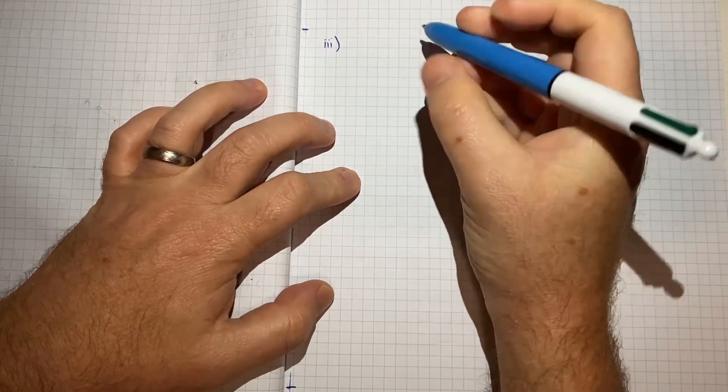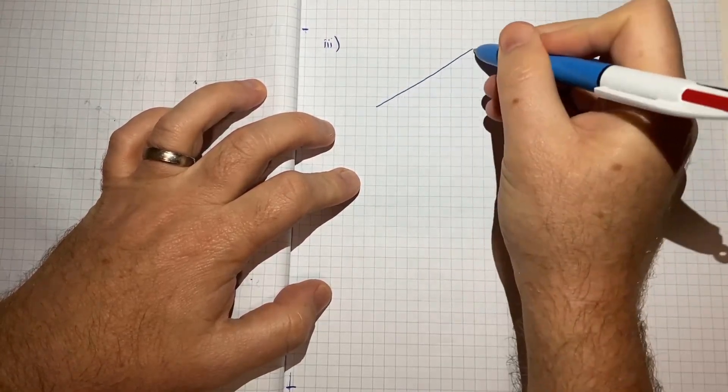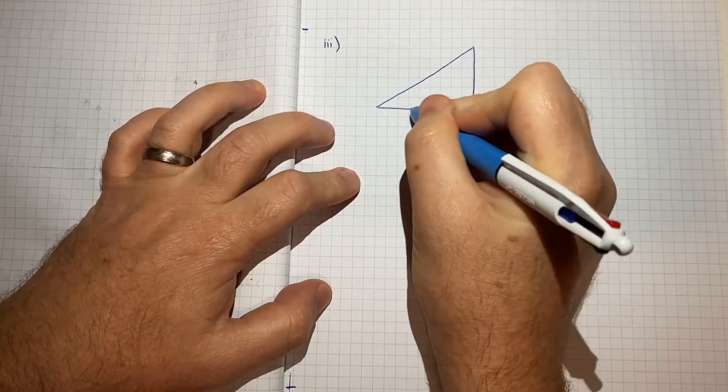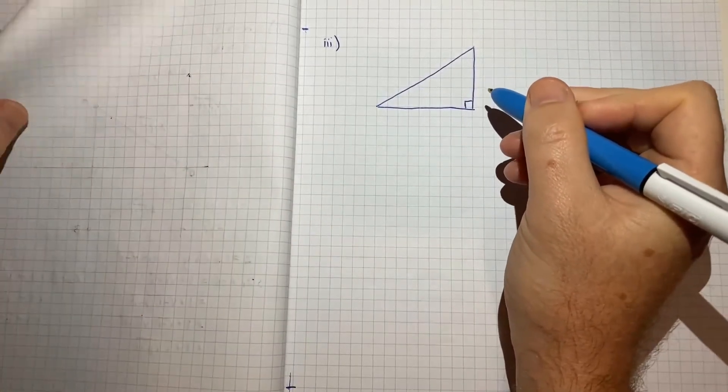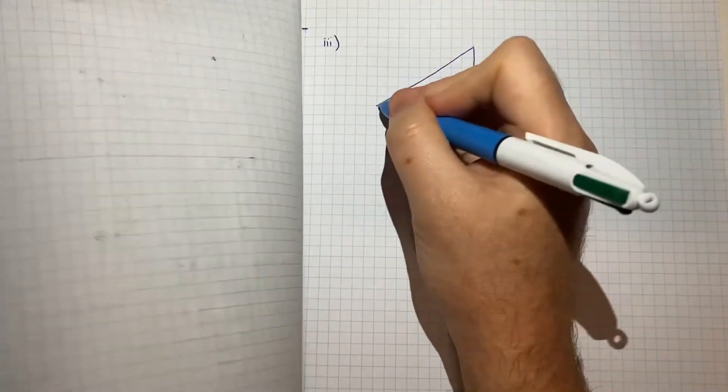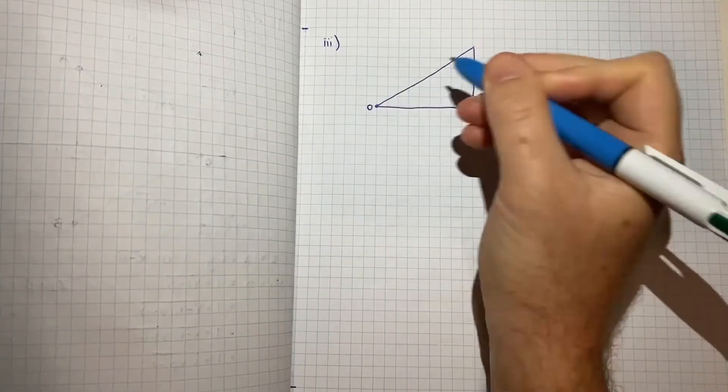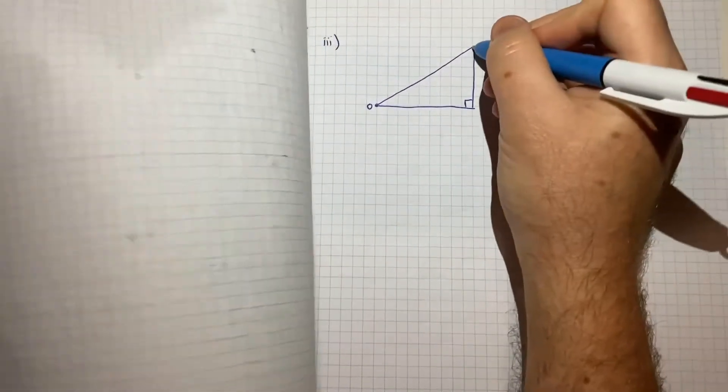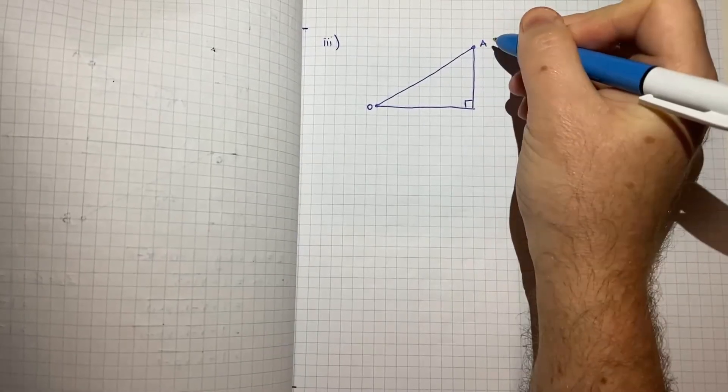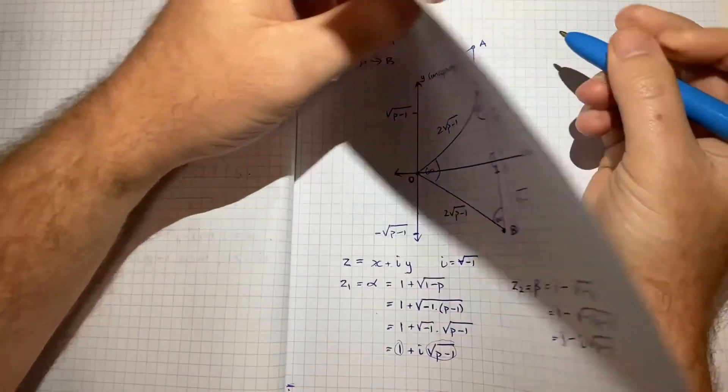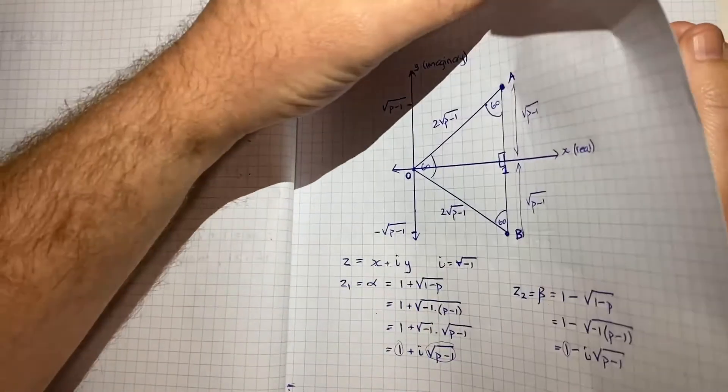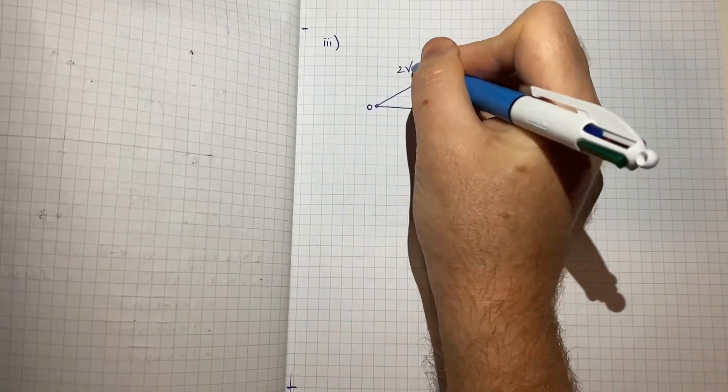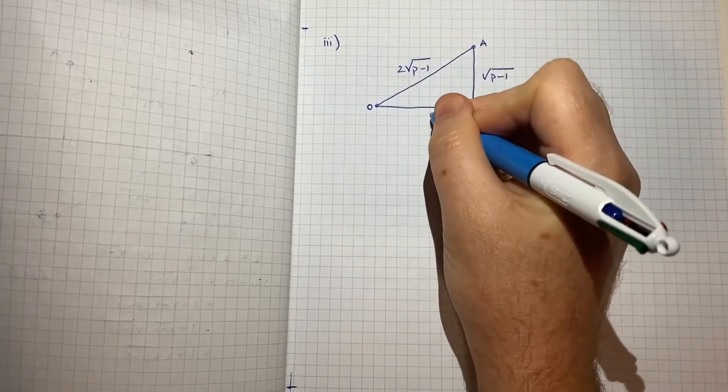So just to remind myself, this would be the origin in our chart, and this would be point A, and this would be root P minus 1, this would be 2 root P minus 1, and this would be a length 1.